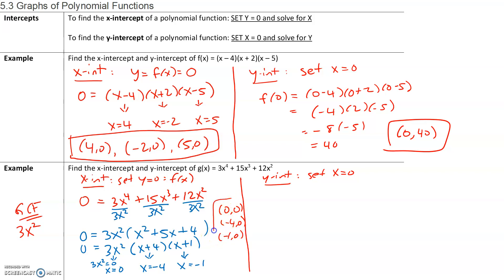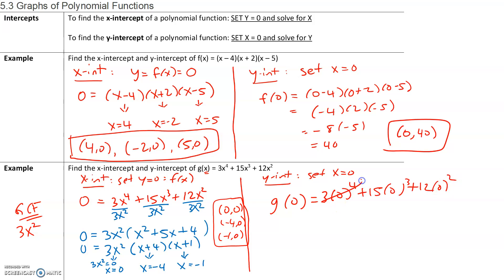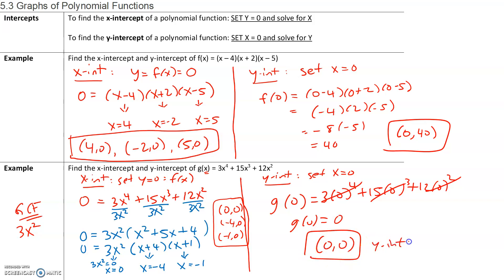For all x-intercepts, the y-value is 0. For the y-intercept, we set the x-value equal to 0. We write g of 0, which equals 3 times 0 to the 4th, plus 15 times 0 cubed, plus 12 times 0 squared. Each term gives 0, so g of 0 equals 0. Our y-intercept is (0, 0).